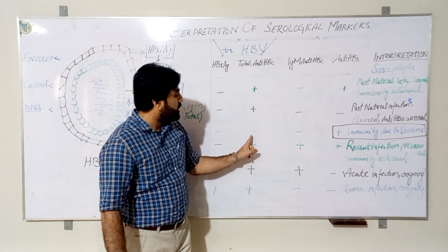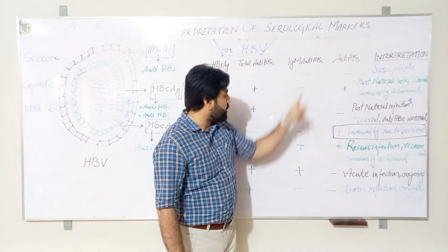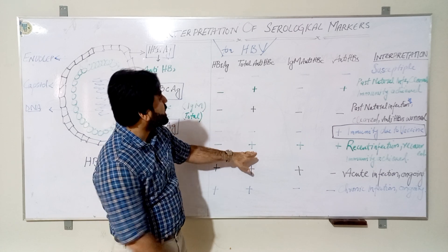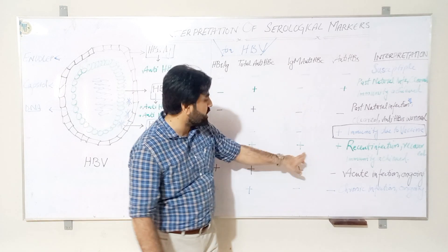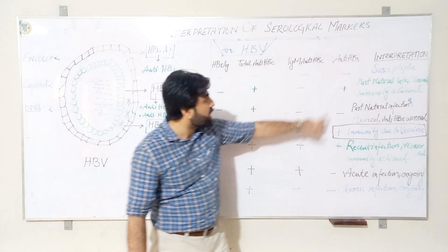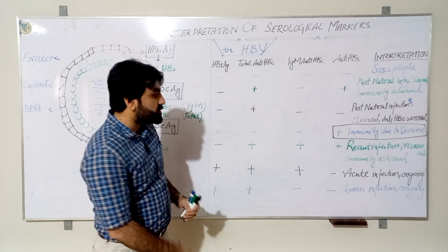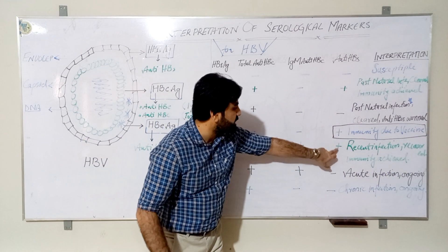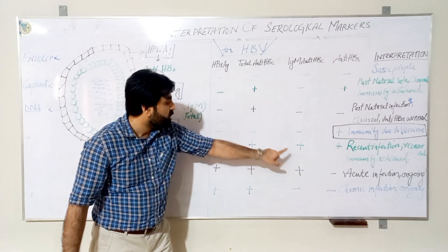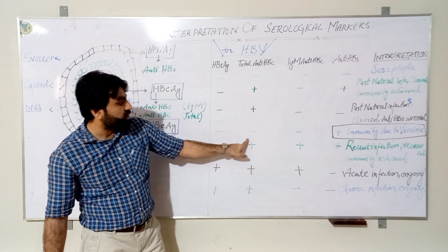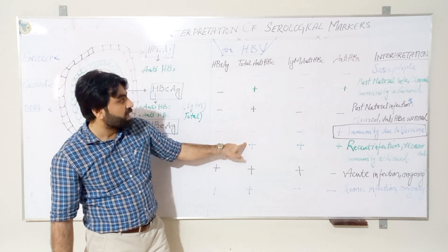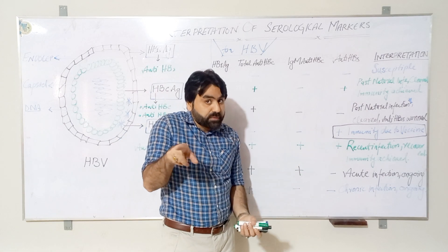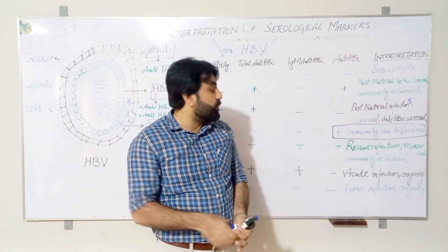Another case: if HBsAg is absent but total anti-HBc is present, IgM anti-HBc is present, and anti-HBs is present, this means recent infection has recovered and immunity is achieved. The presence of anti-HBs shows immunity, total anti-HBc shows exposure, and IgM anti-HBc indicates that the exposure was very recent but has now resolved.